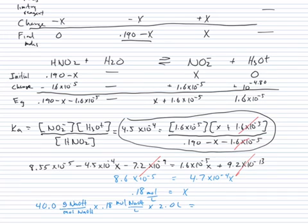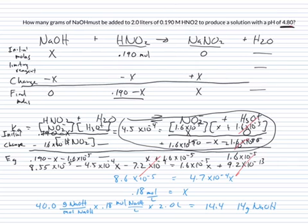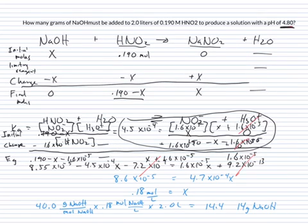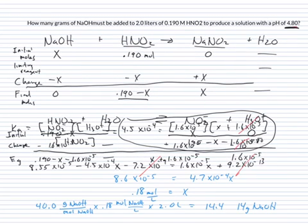This turns out to be 14.4, or with the correct number of sig figs, 14 grams of NaOH would need to be added to our original solution to get a pH of 4.80 that we originally wanted.